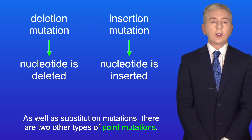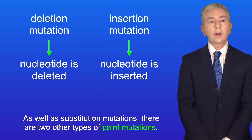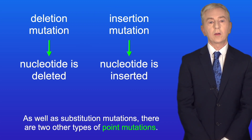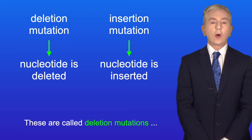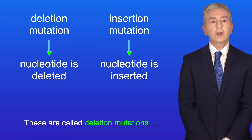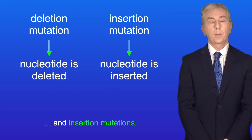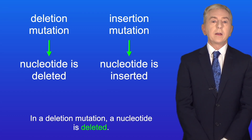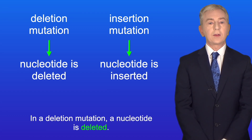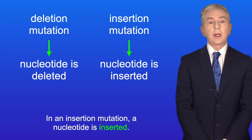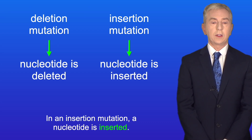As well as substitution mutations, there are two other types of point mutations. These are called deletion mutations and insertion mutations. In a deletion mutation, a nucleotide is deleted, and in an insertion mutation, a nucleotide is inserted.